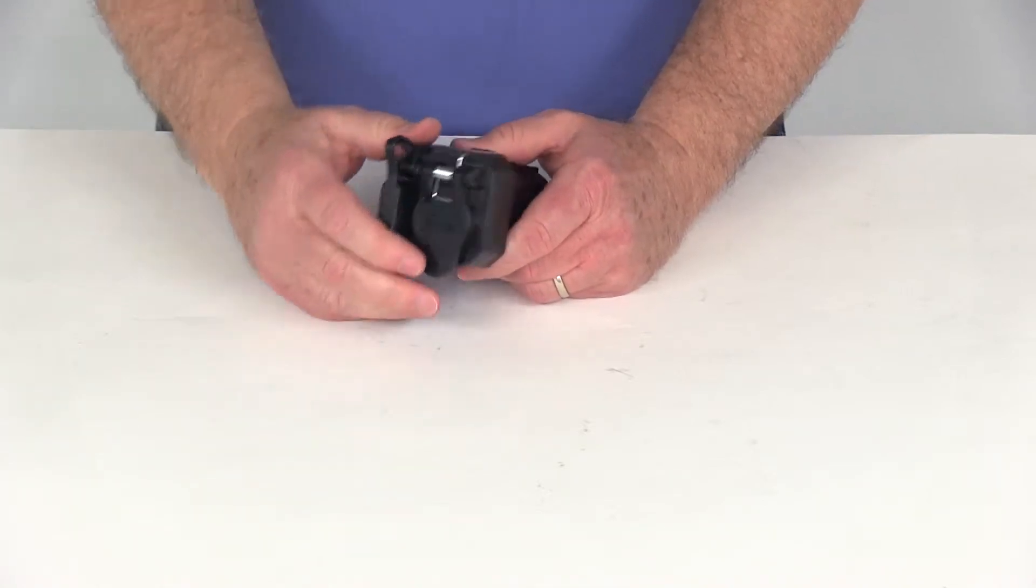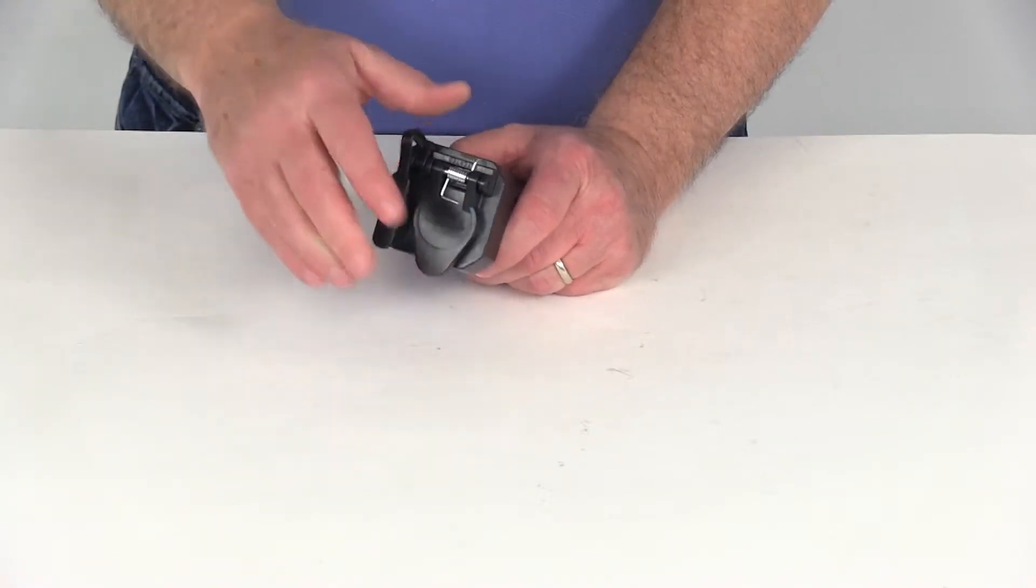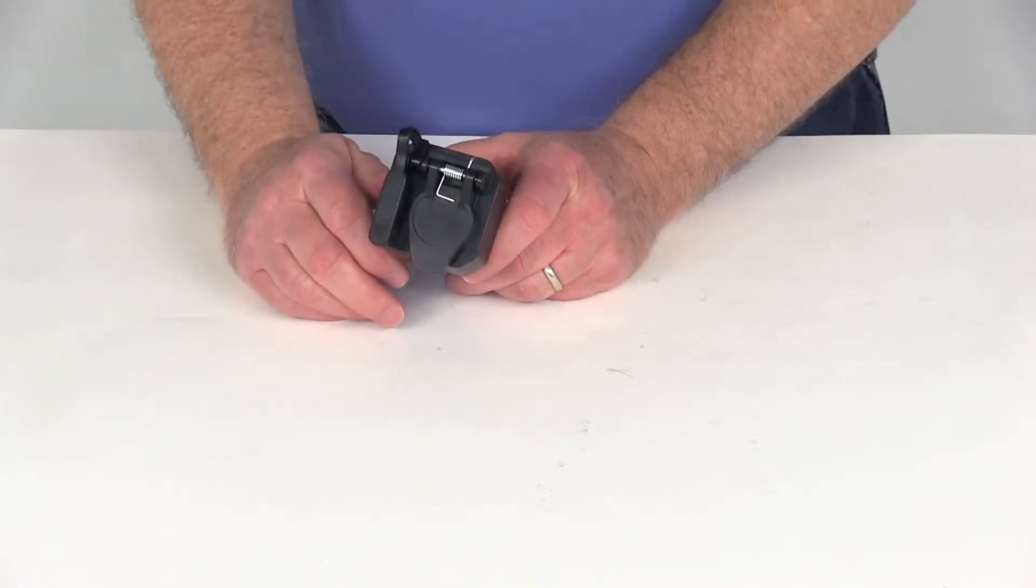Now this adapter will convert your 7-Way plug that's on your vehicle down to a 6-Way Round plug or a 4-Way Flat plug to fit your trailer's connector.